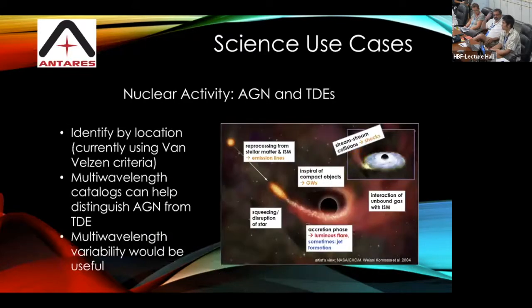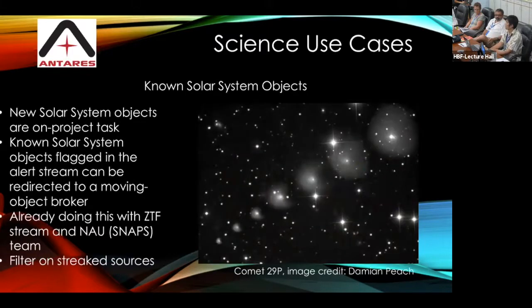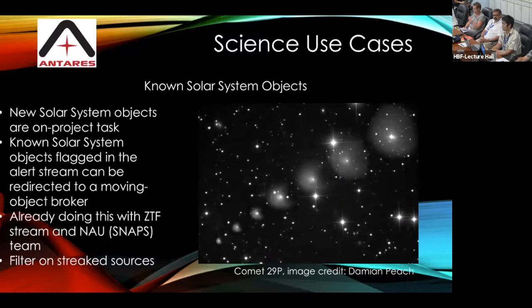If you are interested in Tidal Disruption Events — which occur very close to the center of galaxies, caused by accretion of stellar material by a black hole producing a flare — you can filter for alerts that are very close to galaxy centers. Or if you are working on solar system objects, you can discover new comets, but also do long-term monitoring of comets that show periodic outbursts, or active asteroids that suddenly develop cometary behavior.